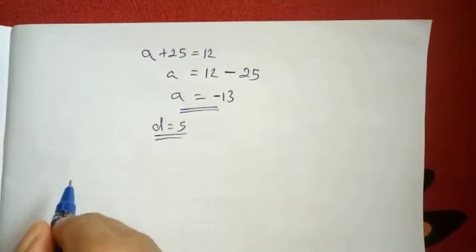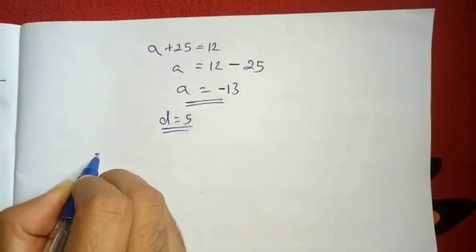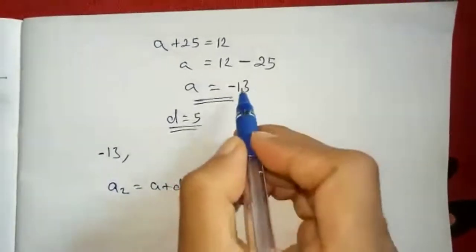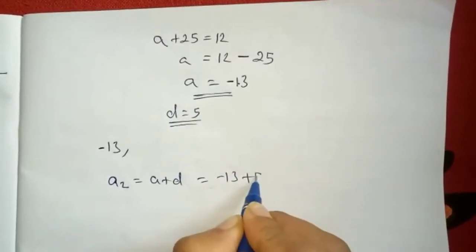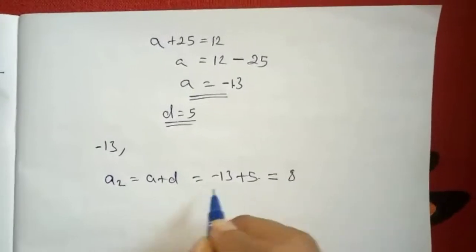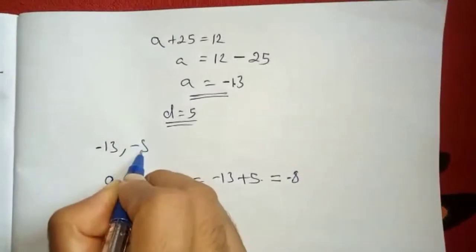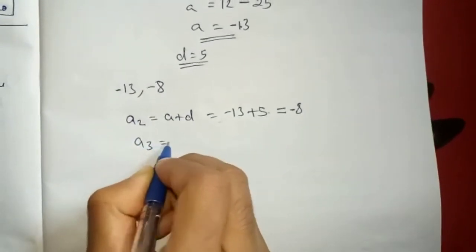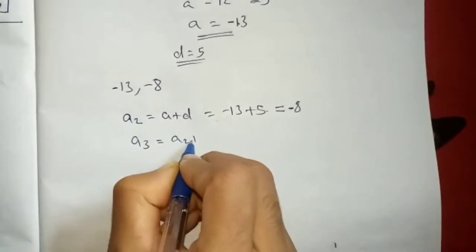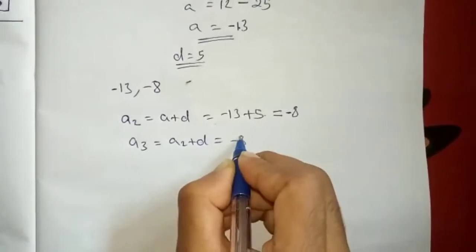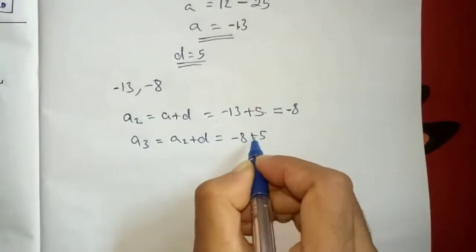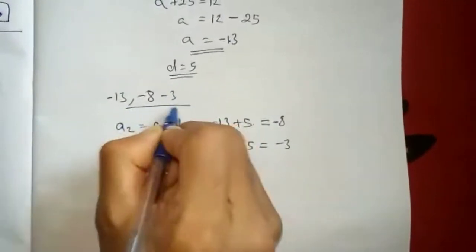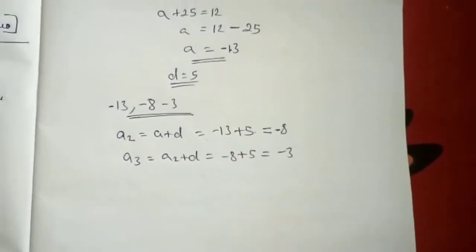Now you can write the first three terms. First term will be minus 13. What will be the second term? A2 equals to A plus D — minus 13 plus 5. Bigger number is minus, so minus 8. Then A3: A2 plus D — minus 8 plus 5 is minus 3. So you got three terms of AP: minus 13, minus 8, minus 3.